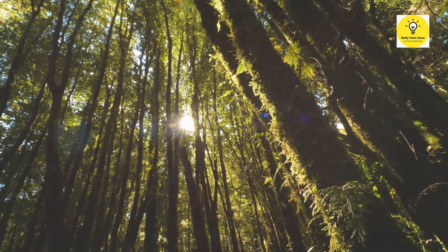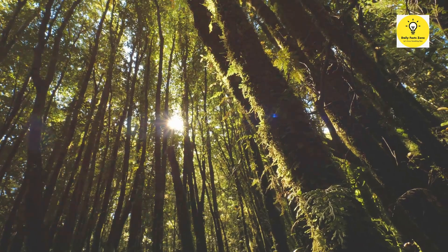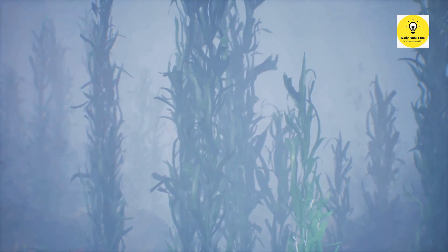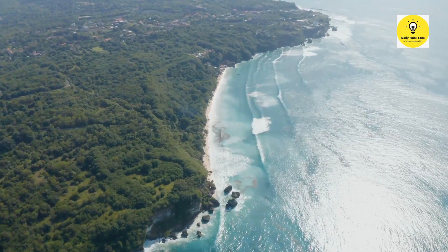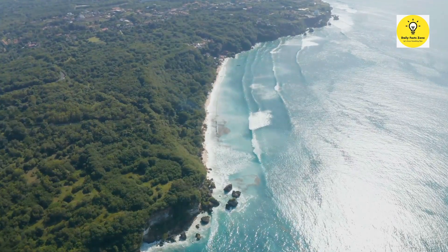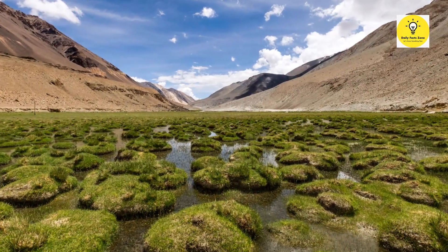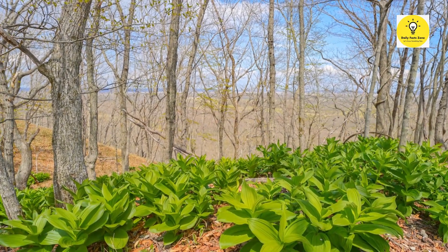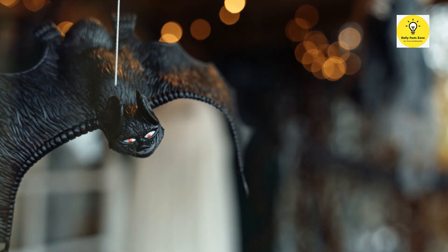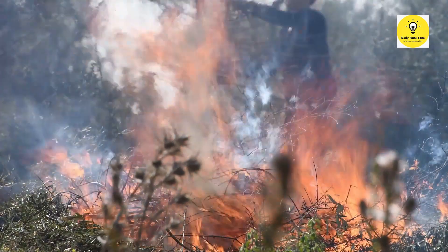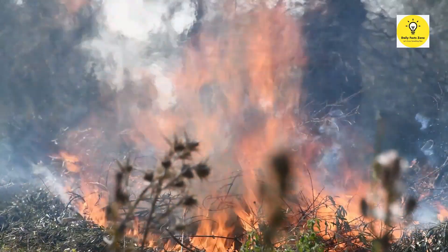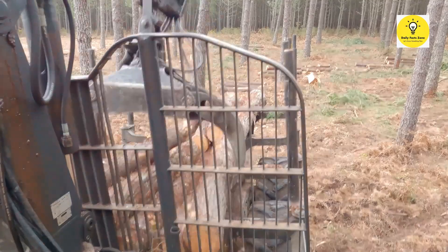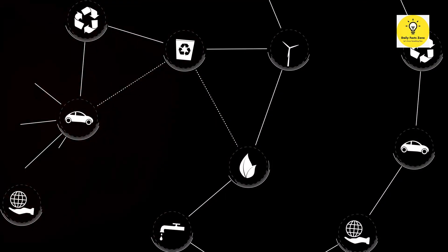The oxygen we breathe is a product of photosynthesis by plants and algae in terrestrial and aquatic ecosystems. Forests and oceans act as carbon sinks, absorbing carbon dioxide from the atmosphere and mitigating the effects of climate change. Wetlands filter pollutants from water, improving water quality and providing habitats for countless species. Insects, birds and bats pollinate our crops, ensuring food production for billions of people. Ecosystems also provide us with natural resources such as timber, fibres and medicines, supporting our economies and livelihoods.